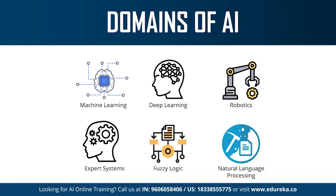Machine learning is the science of getting machines to interpret, process, and analyze data to solve real-world problems. It includes supervised, unsupervised, and reinforcement learning. Deep learning is the process of implementing neural networks on high-dimensional data to gain insights — it's the logic behind Facebook's face verification, self-driving cars, and virtual assistants like Siri and Alexa. Natural language processing draws insights from human language to communicate with machines; Twitter uses NLP to filter terroristic language, and Amazon uses it to understand customer reviews.